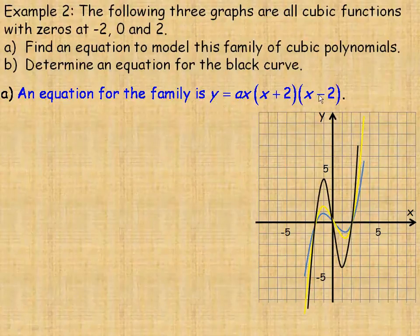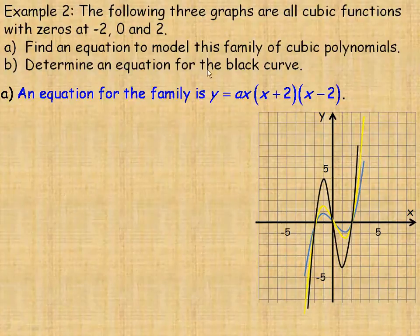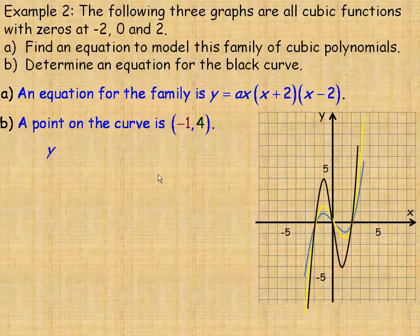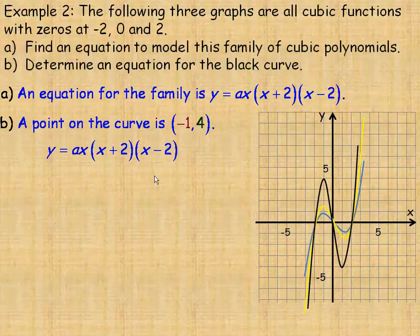In part B here, we're going to determine an equation for the black curve. So we need to identify a point on this curve. An example of a point on that curve is negative 1, 4. So we use the negative 1, 4 point. You could use almost any point on that curve. There's our point negative 1, 4. So I'm going to put 4 in place of y and negative 1 in place of x here and here and also there as well.